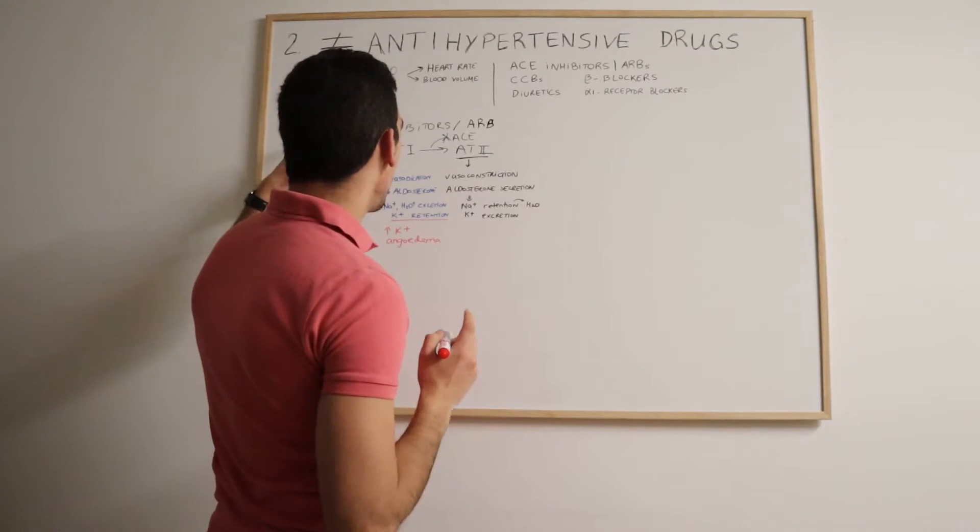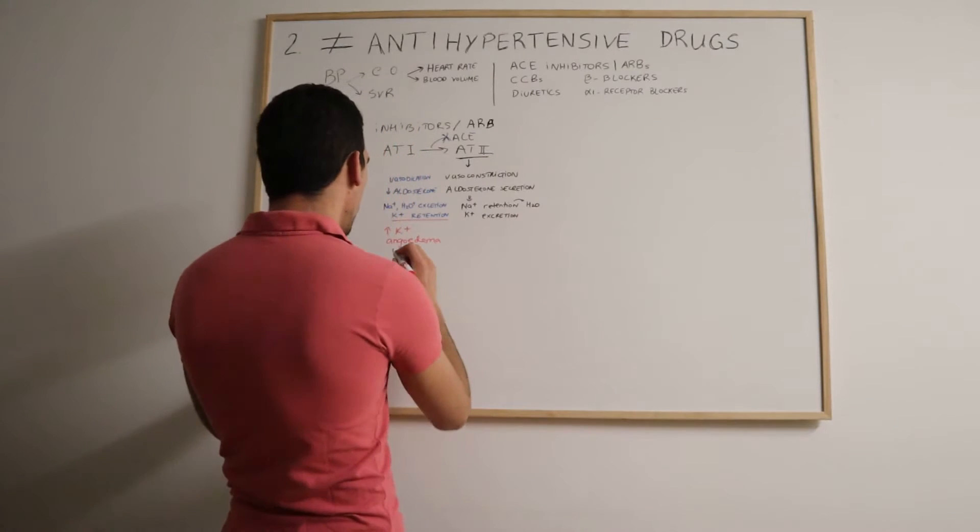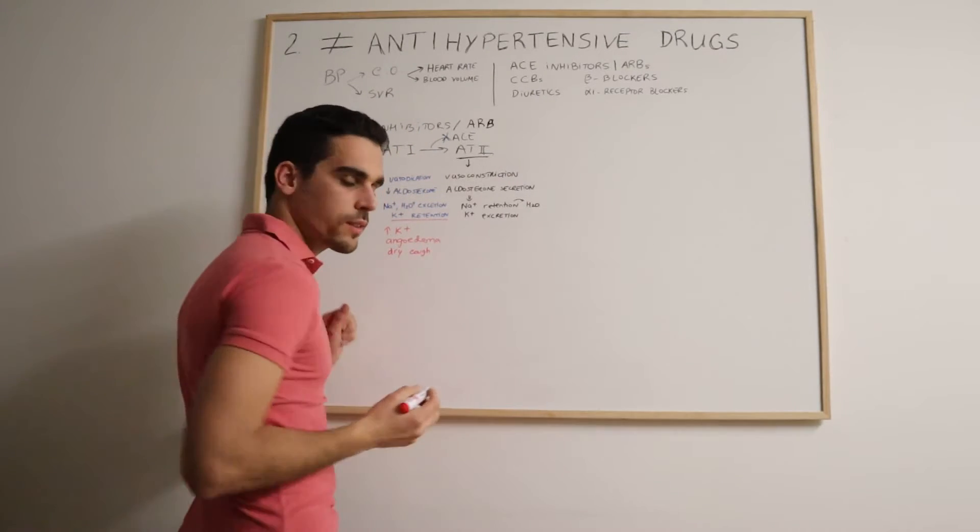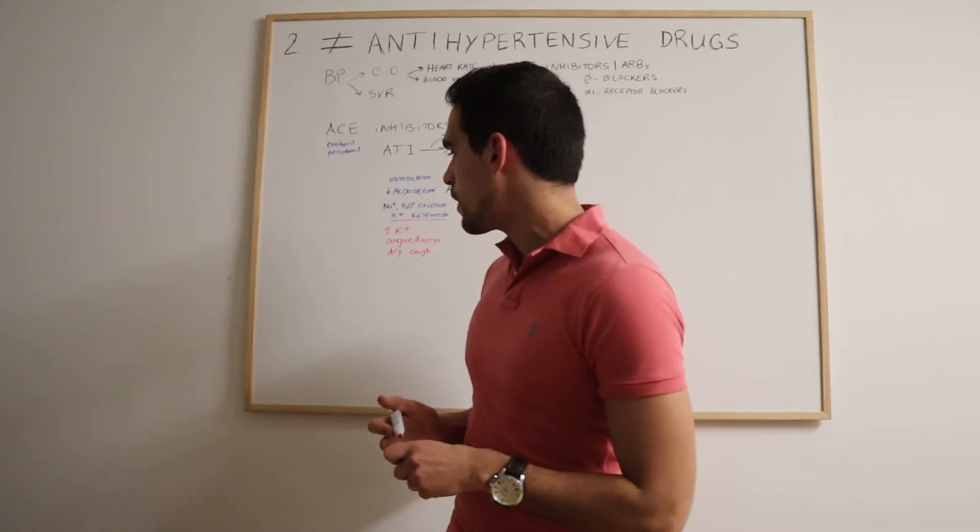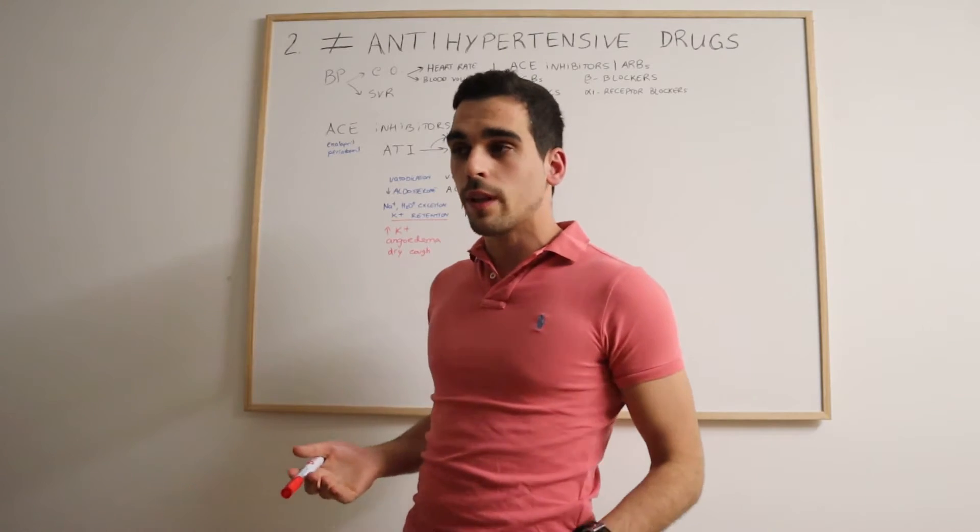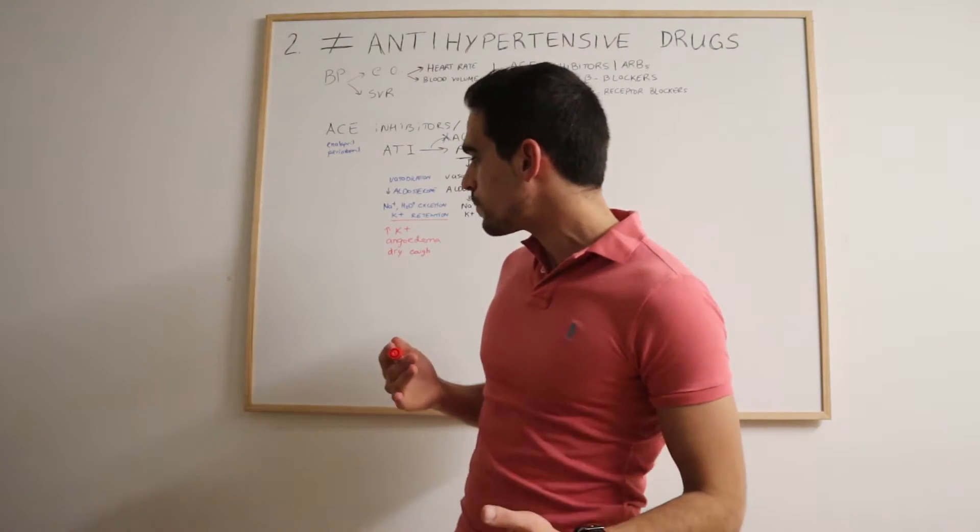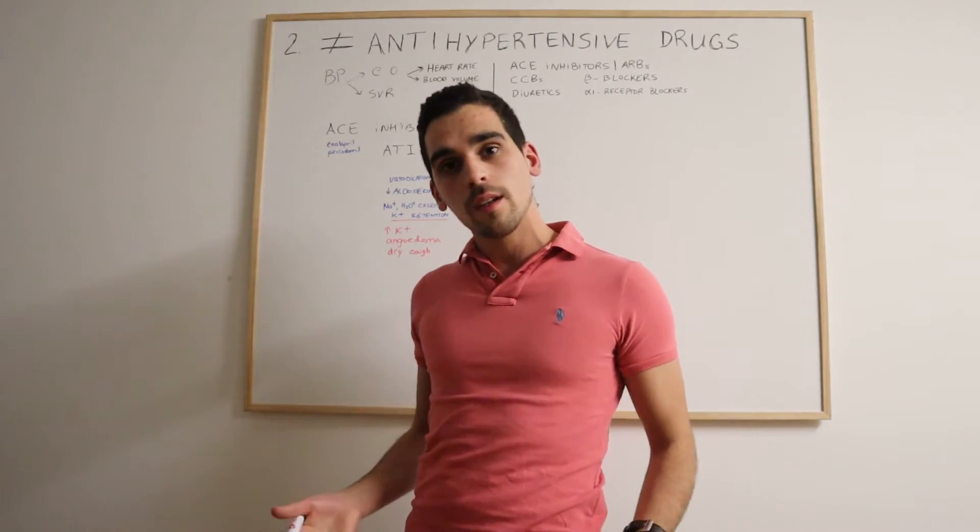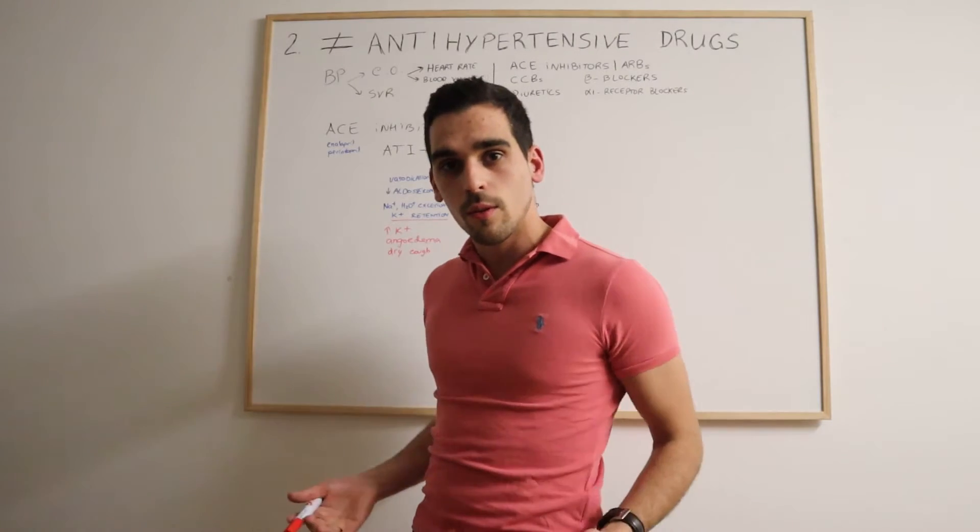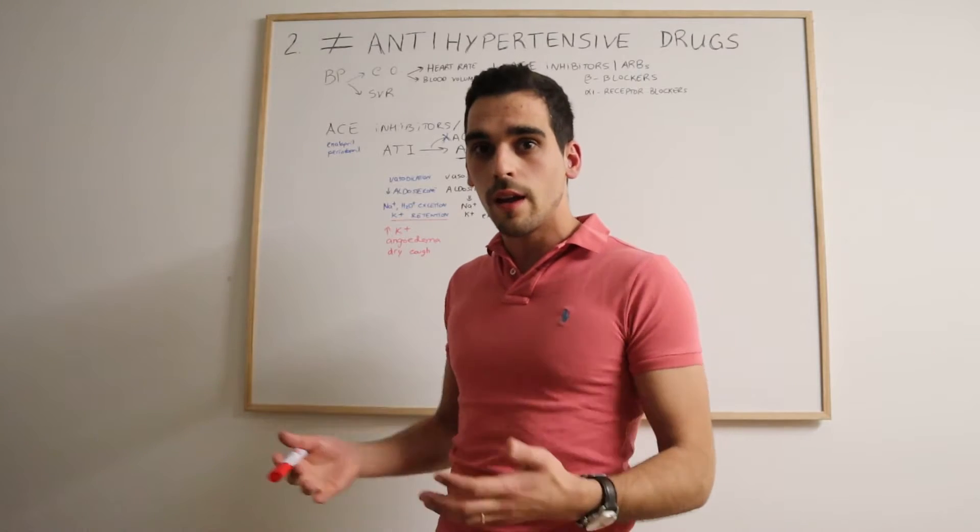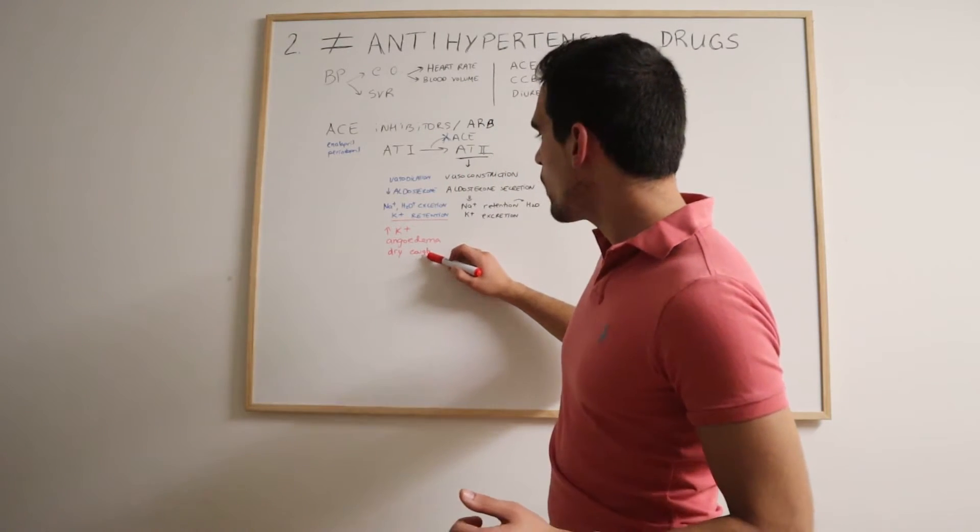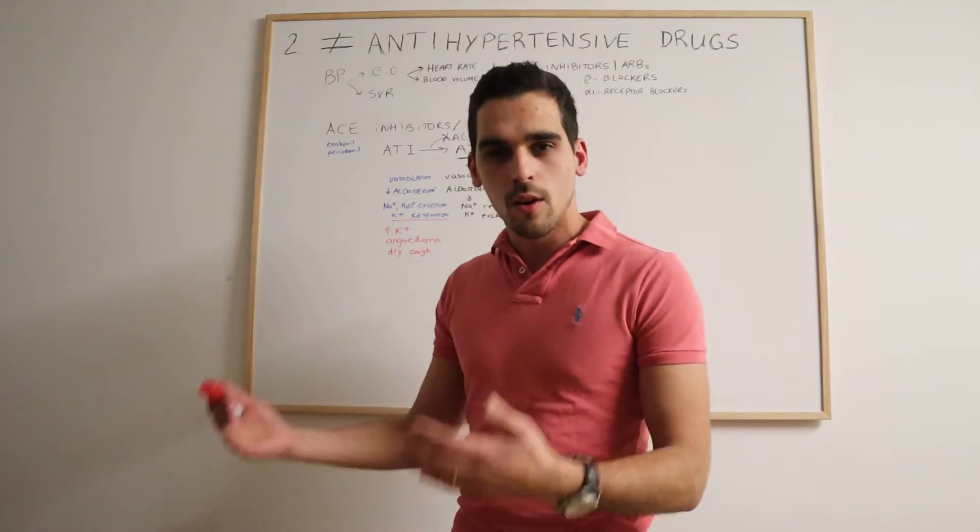And specifically for ACE inhibitors, they can cause a dry persistent cough. And why does it happen? Basically the ACE enzyme is responsible as well for the breakdown of bradykinin in the lungs. So when it's inhibited, there is no breakdown of the bradykinin, so there is its accumulation in the lungs, so then the patients will suffer a dry cough.